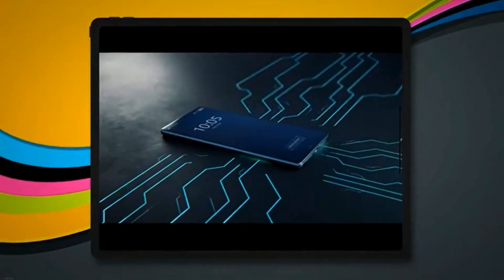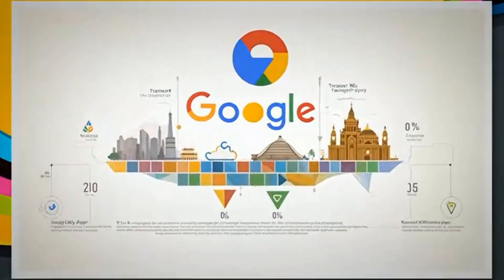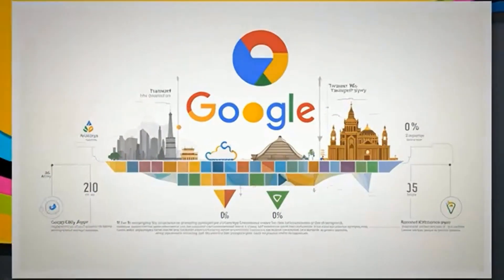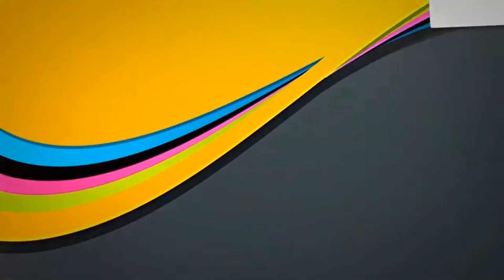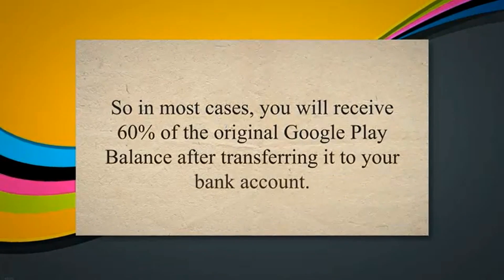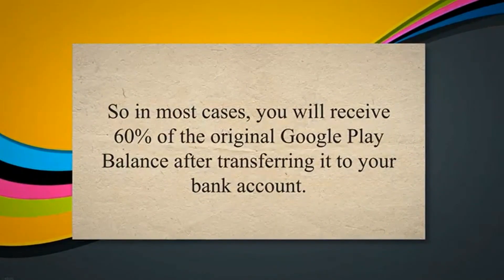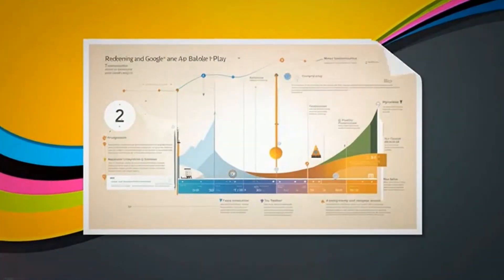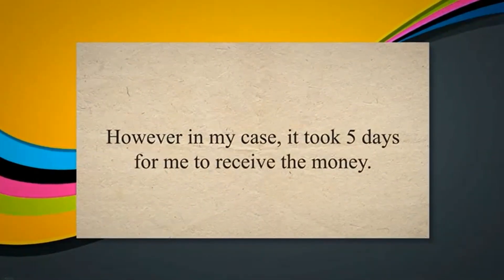Frequently asked questions: Google keeps 30% of the total balance you're about to transfer to your bank account, and the transferring app usually keeps 10% as their own commission. So in most cases, you will receive 60% of the original Google Play Balance after transferring it to your bank account. It takes about 72 hours, though in my case it took 5 days to receive the money.